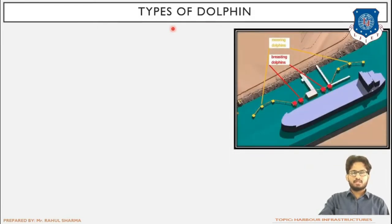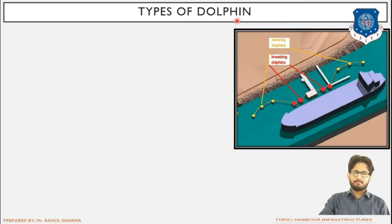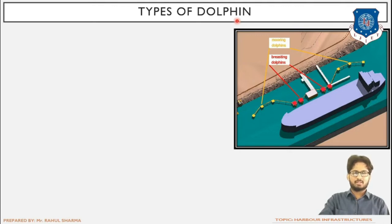Dolphins are marine structures used for the tying up of ships. They are constructed specifically as the structure to which the ship's wires or ropes will be tied up. That is the basic purpose of dolphins, and we will be learning about them in more detail.